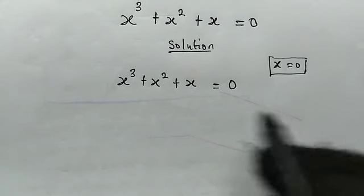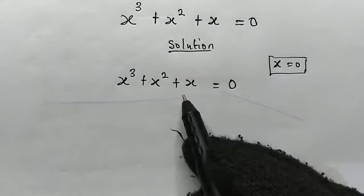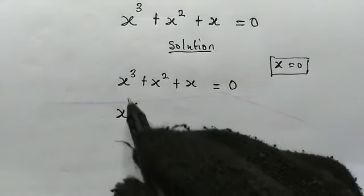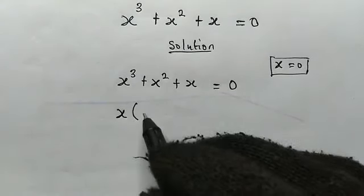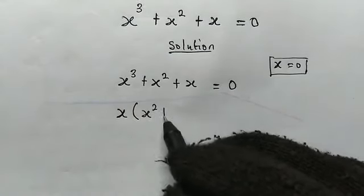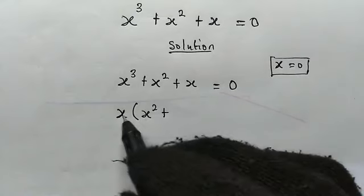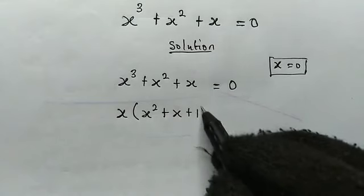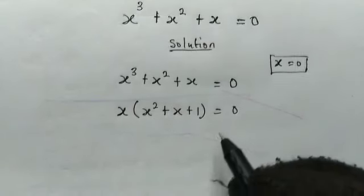So what do we do from here? Look at the left hand side of this equation, x is common, so we factor it out. So here x cubed divided by x will give us x squared, plus x squared divided by x will give us x, plus x divided by x, that is 1, then this is equal to 0.